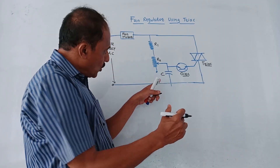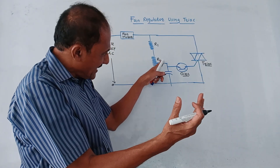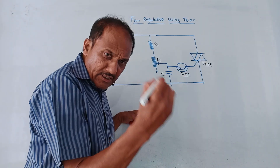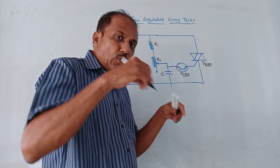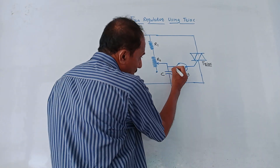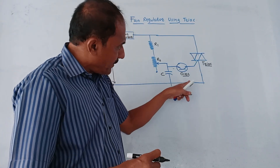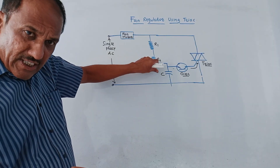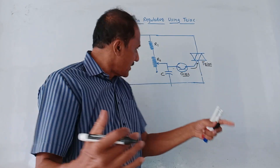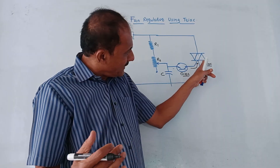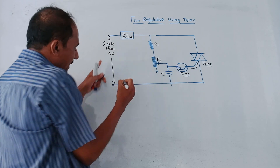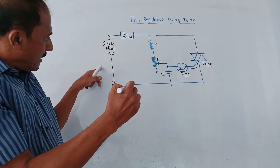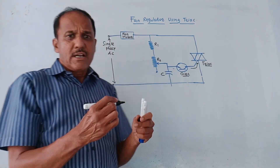As you vary the position of the wiper of potentiometer R2, the capacitor C begins to charge. Once a sufficient voltage is developed across the capacitor, it overcomes the breakover voltage of the DIAC, which then supplies a pulse to trigger the TRIAC. Once the TRIAC is triggered, the circuit path is completed and the single phase AC supply goes to the fan motor through the TRIAC and back to the mains.